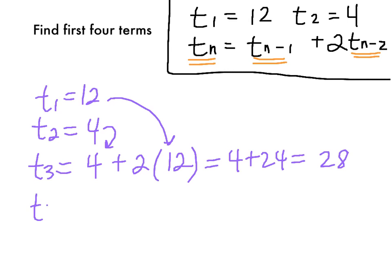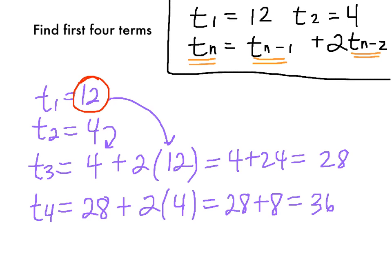The last term we need to find is t sub 4. Again, we take t sub n minus 1, or the last term, which in this case is t sub 3, or our 28. Then we add to that 2 times t sub n minus 2. Two terms before where we are is our t sub 2. So that's where your 4 will come in. Our fourth term is now 28 plus 8 for 36. So your first four terms here, t sub 1 is 12, t sub 2 is 4, t sub 3 is 28, and t sub 4 is 36.